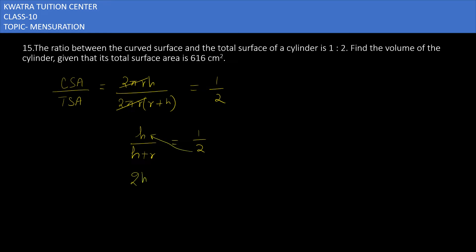You can use cross multiplication for that. 2h equals h+r on the right side, so you can take h to the left side. It will give you 2h minus h, so h is equal to r.